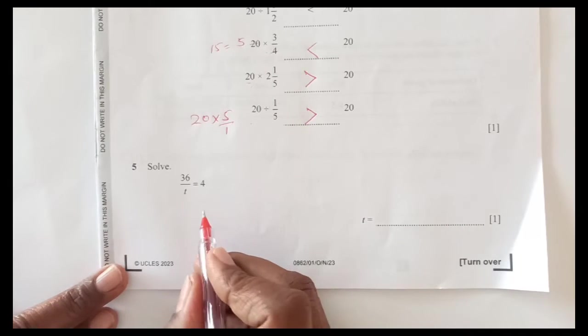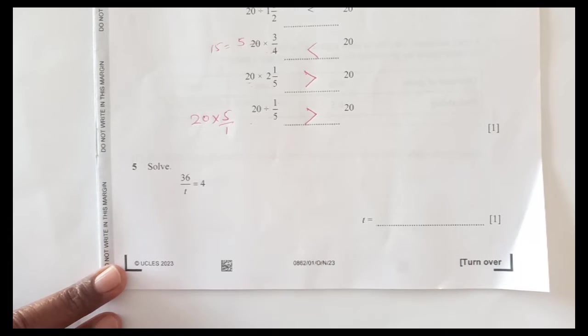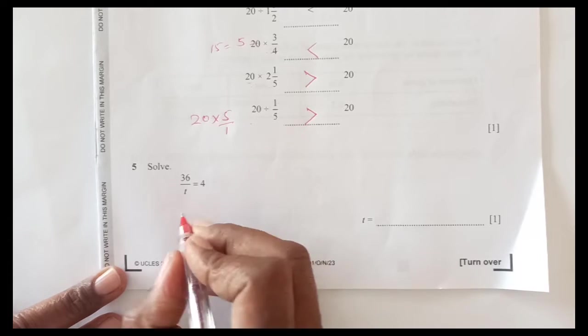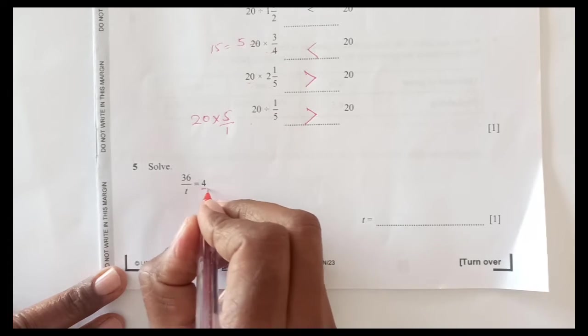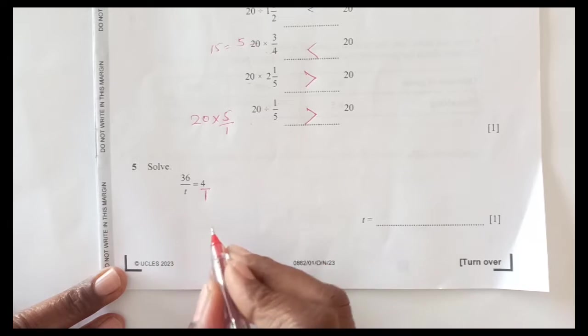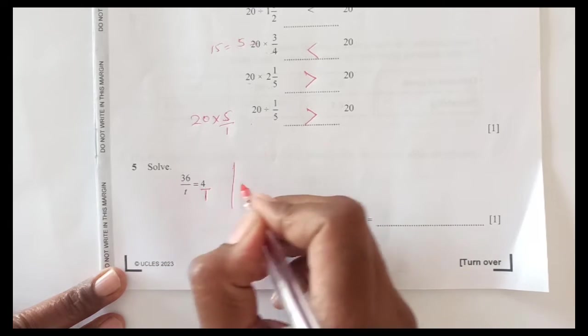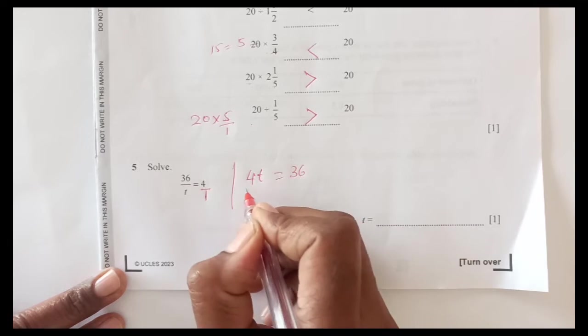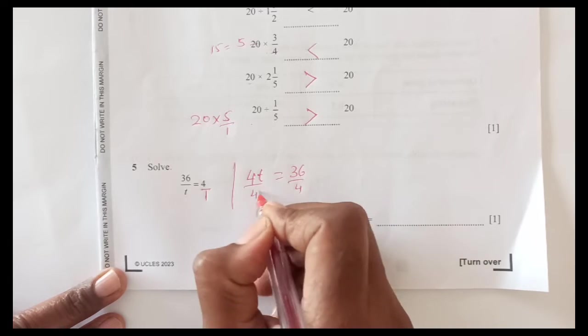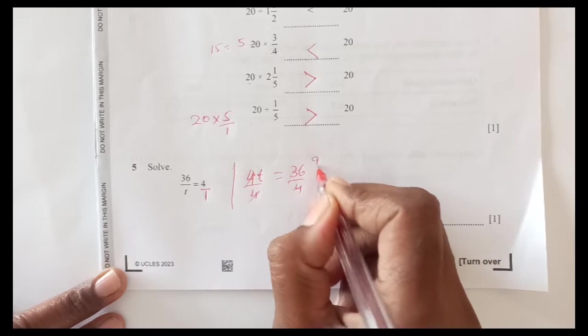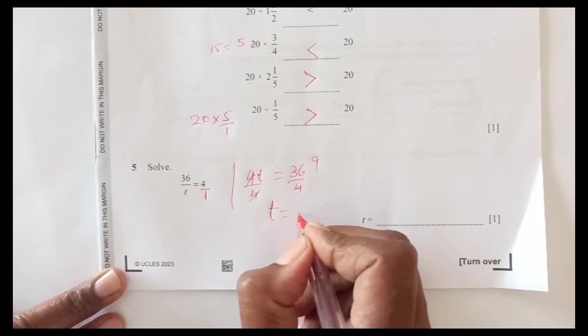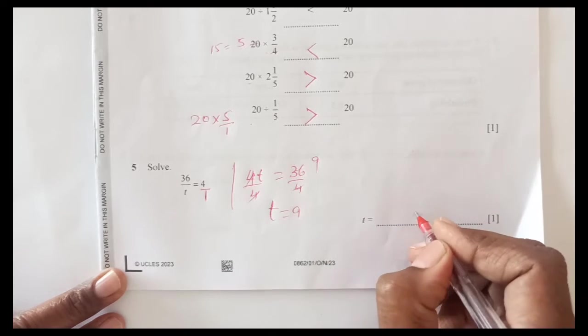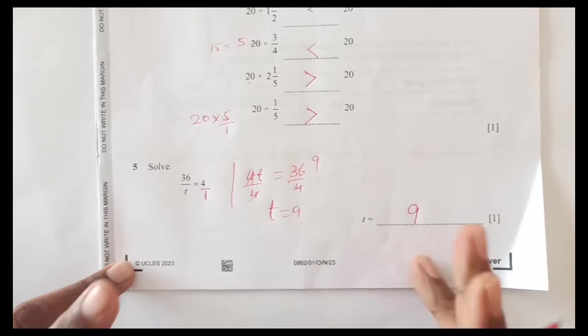Solve 36 over t equals to 4. So 36 over t, this is 4 over 1. Now you cross multiply, so this will become t times 4 is 4t equals to 36. Now divide by 4 on both sides, so you have t equals to 9. 4 times 9 is 36, so value of t is 9.